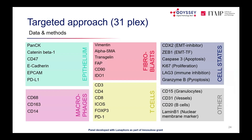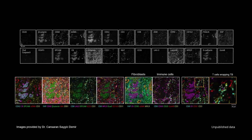A 31-plex marker panel was developed covering various cell types relevant to the budding question. The panel includes cytokeratin, EpCAM, CDX2, CD3, alpha smooth muscle actin, beta-catenin, CD68, ZEB1 (EMT transcription factor and E-cadherin repressor), fibroblast activating protein, vimentin, E-cadherin, CD163, CD8, CD31, and others.